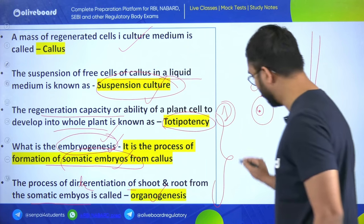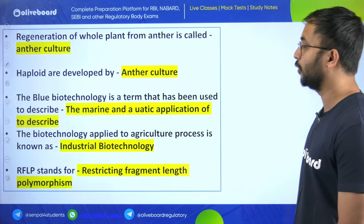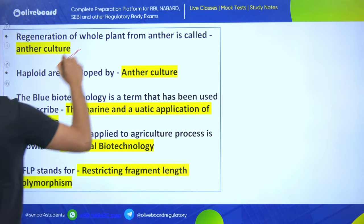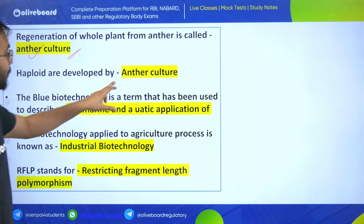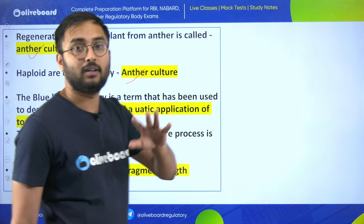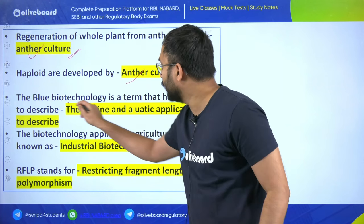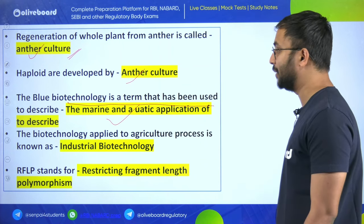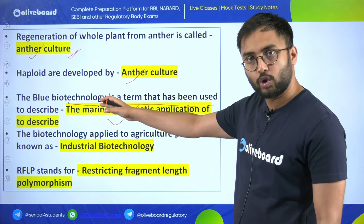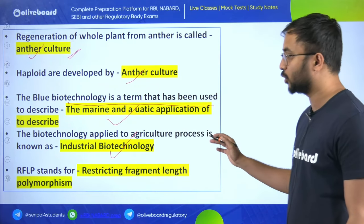Embryogenesis and organogenesis are two-star important terms from cell and plant physiology. Regeneration of a whole plant from anther is called anther culture. Haploids are developed by anther culture. Blue biotechnology is the term used to describe marine and aquatic applications. Biotechnology applied to agriculture processes is known as industrial biotechnology. RFLP stands for Restriction Fragment Length Polymorphism.